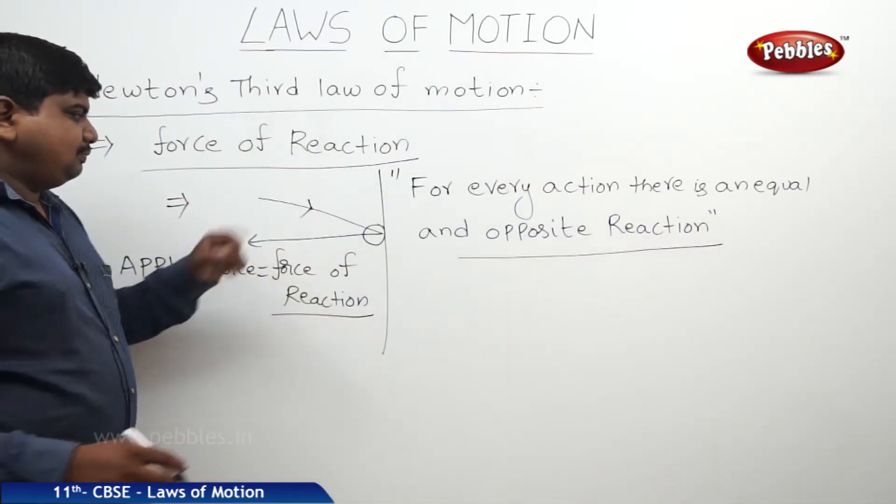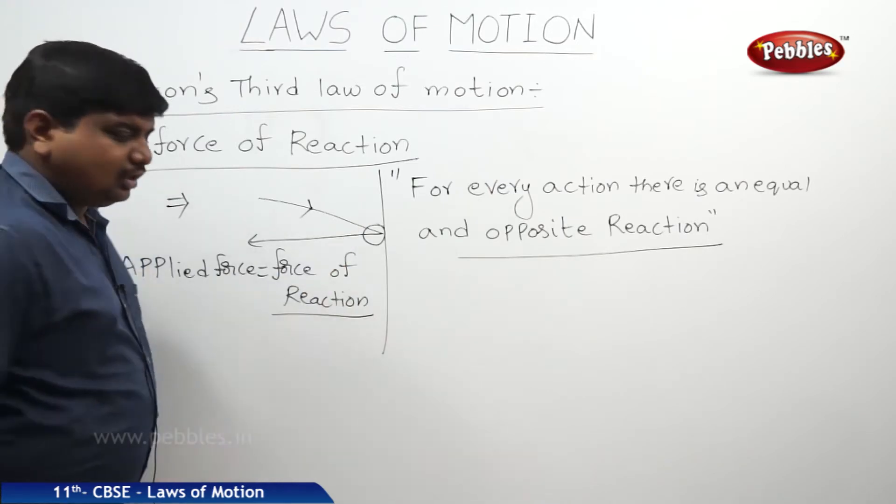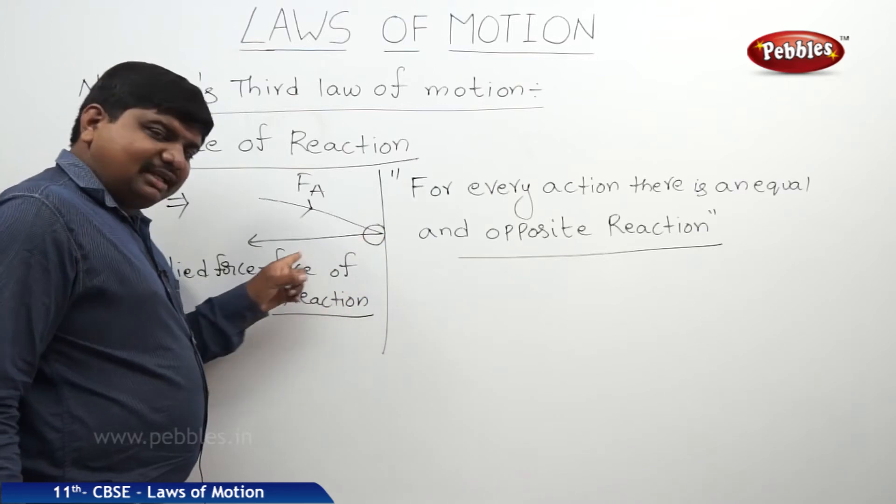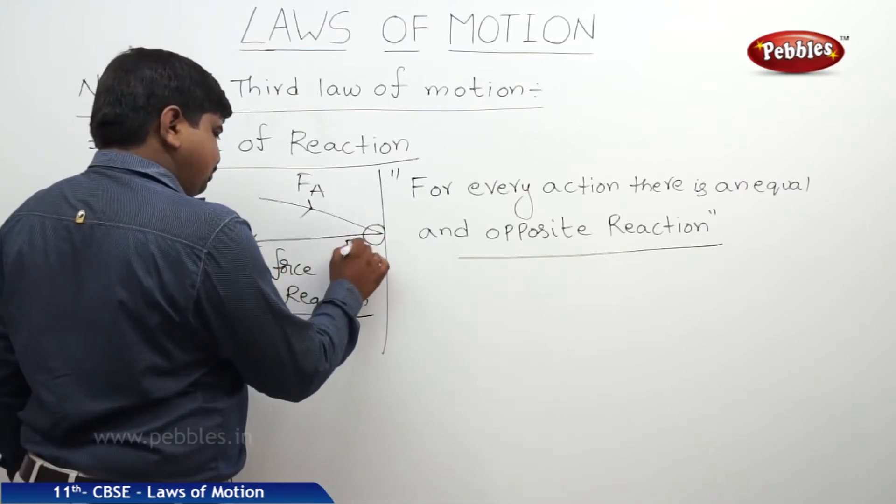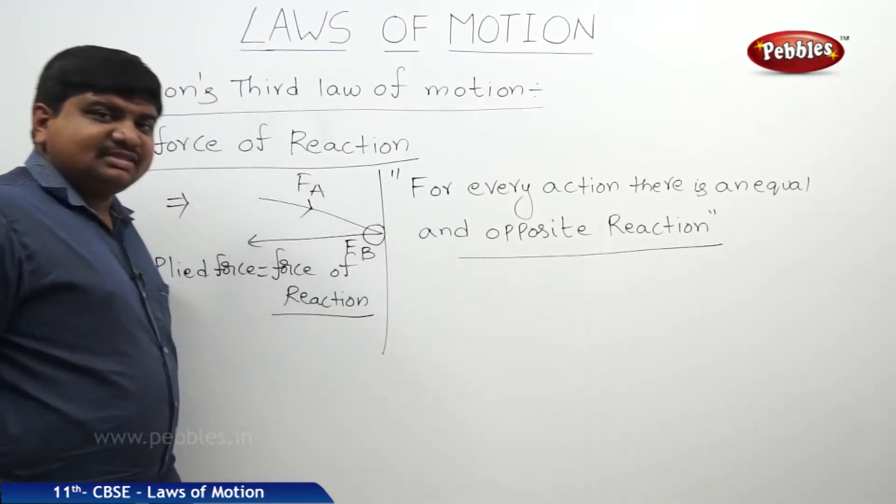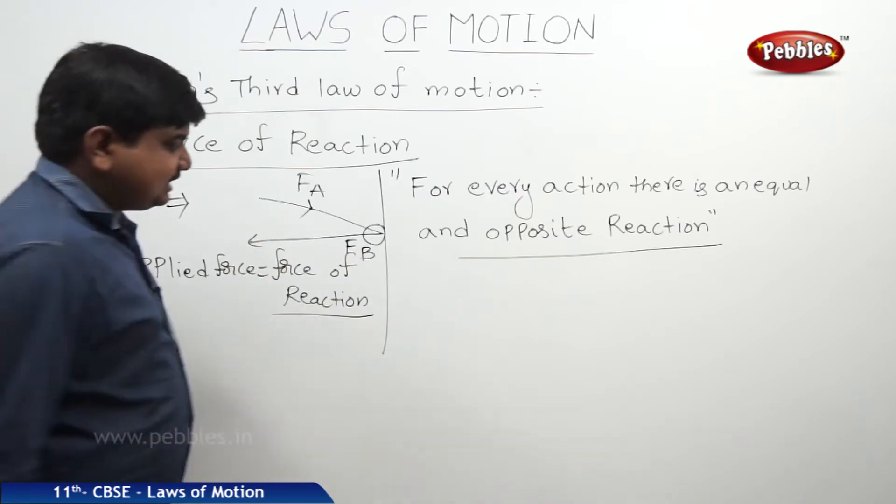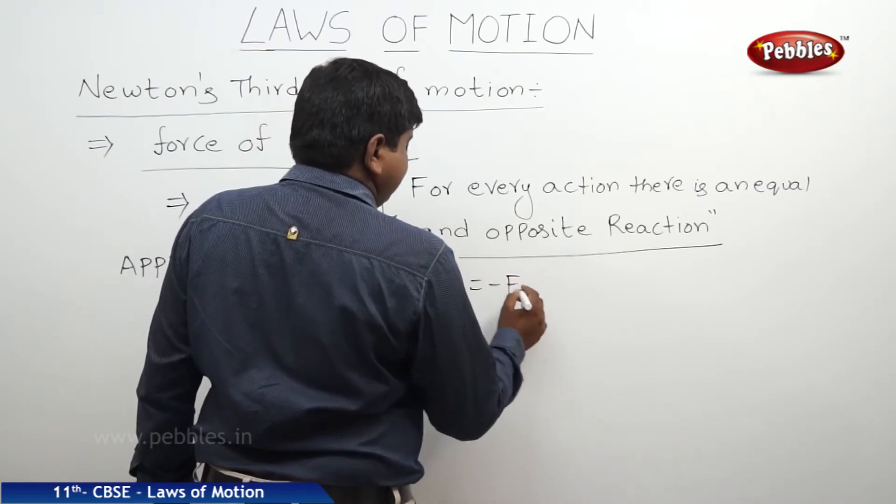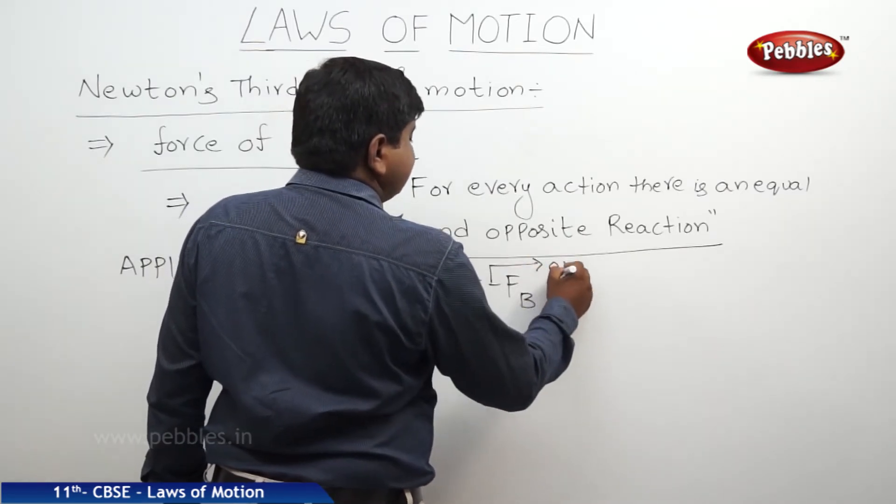Suppose the person who is throwing the ball towards the wall has applied the force F.A. and the wall is impacting the force onto the observer is F.B. Both are having the same magnitude but opposite in direction. Therefore, we can say F.A. is equal to minus F.B., where minus indicates opposite in direction.